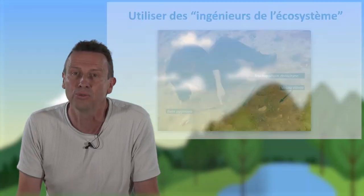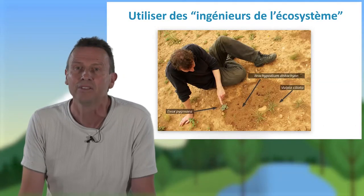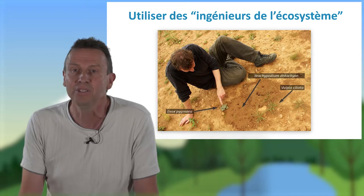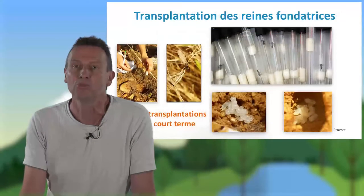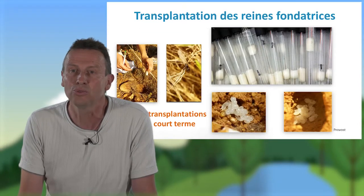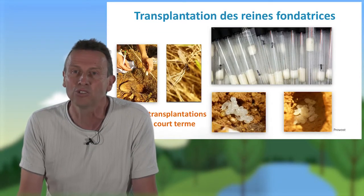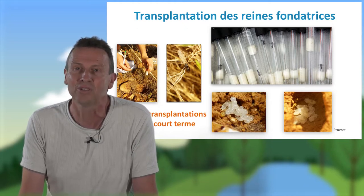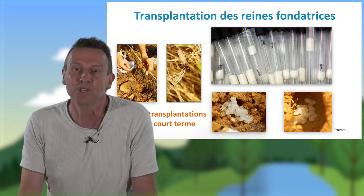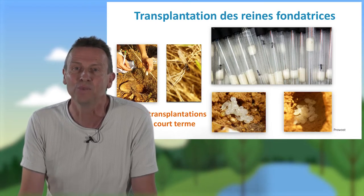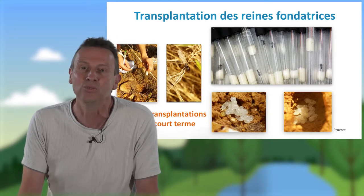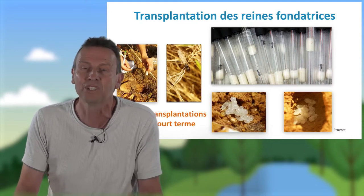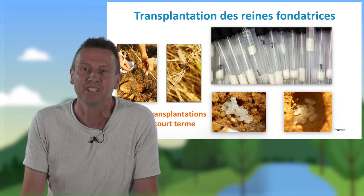Quelques exemples d'opérations de restauration écologique intégrant des principes d'ingénierie écologique. C'est par exemple utiliser ce qu'on appelle des ingénieurs de l'écosystème, c'est-à-dire des espèces qui vont avoir des rôles majeurs dans la restauration, comme dans une opération de restauration de pelouse sèche méditerranéenne où nous avons transplanté des reines fondatrices — c'est-à-dire des fourmis moissonneuses — avec pour objectif que ces fourmis redistribuent les graines des espèces de ce milieu. Après les avoir récoltées et mises en éprouvette, elles sont réintroduites dans le milieu et on suit leur implantation et leurs impacts positifs espérés sur la richesse et la diversité des plantes.